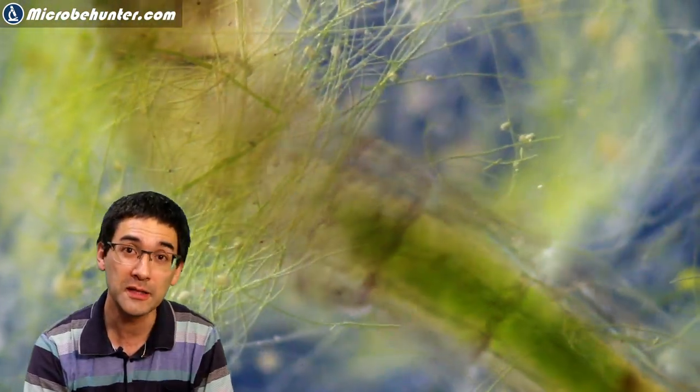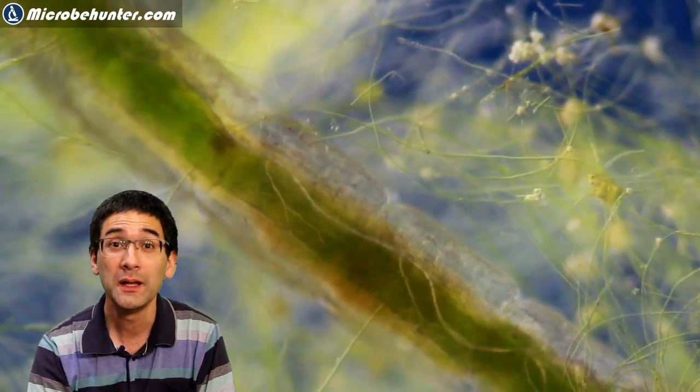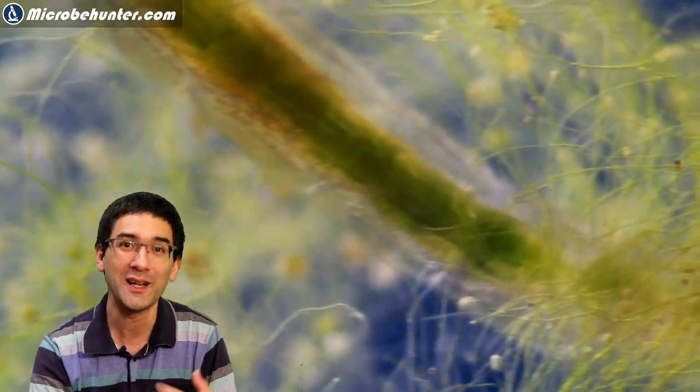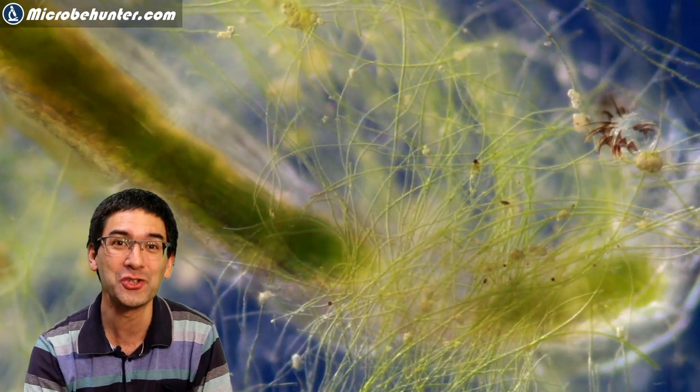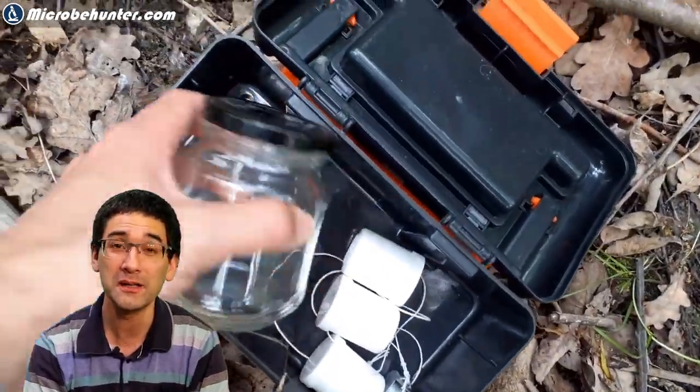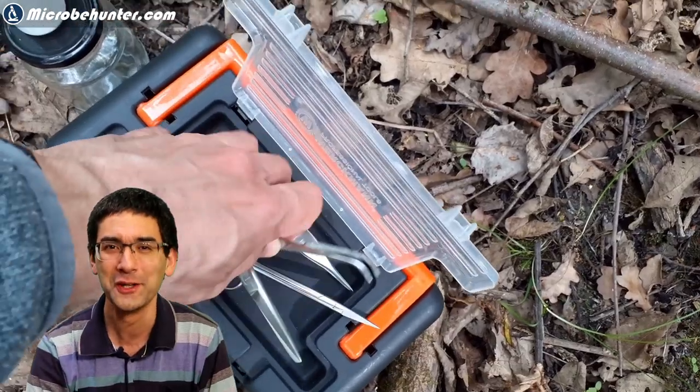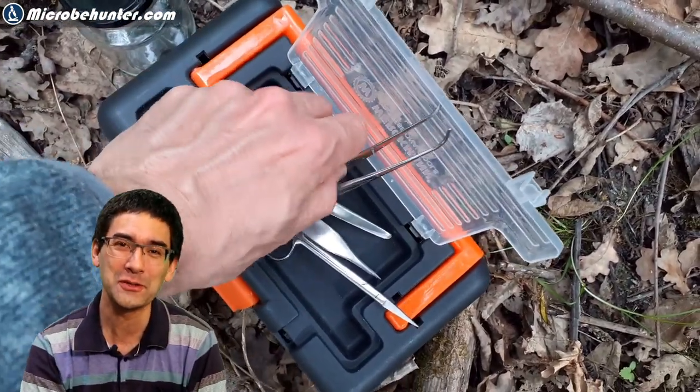When you make an enrichment culture at home by adding fertilizer to pond water, the biodiversity is not quite as high. But natural sources are generally pretty good and quite interesting because you find all sorts of things. I put down my little field box—actually a toolbox that I've converted into a field box.